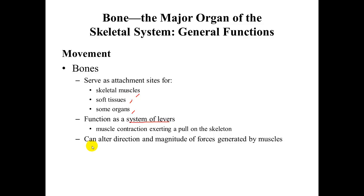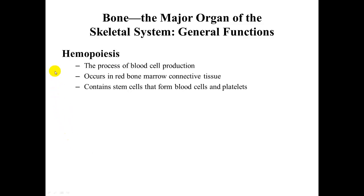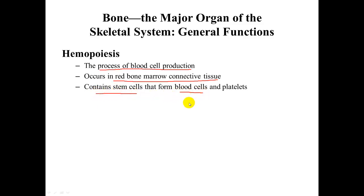Hemopoiesis is the process of blood cell production. It occurs in the red bone marrow of spongy bone, especially at the ends of long bones. This marrow contains stem cells that form red blood cells, white blood cells, and platelets.